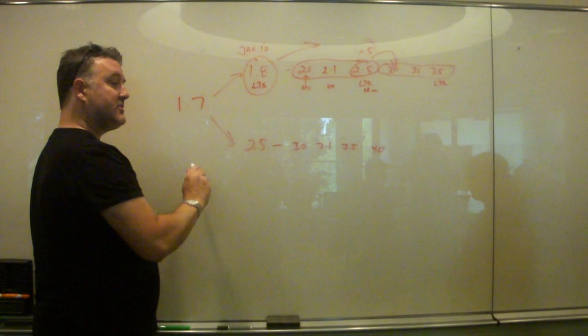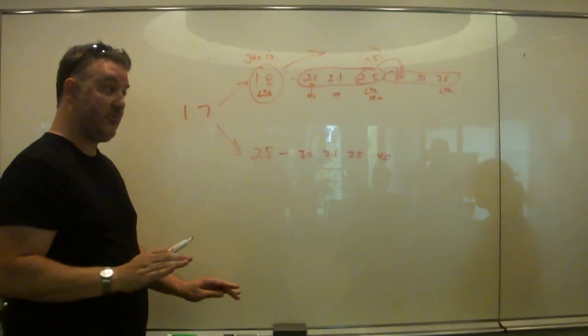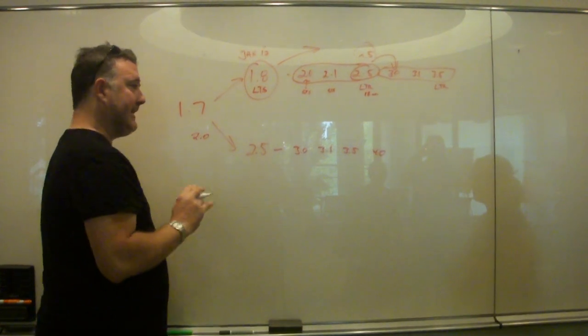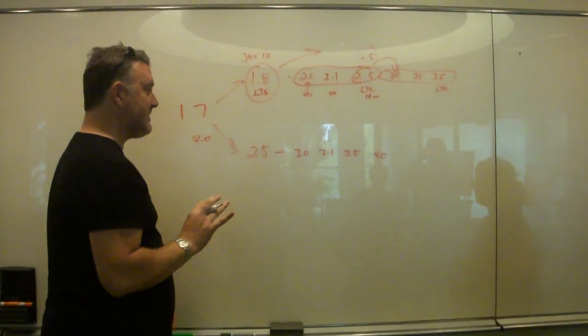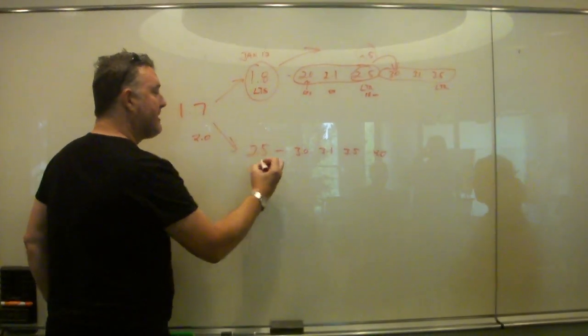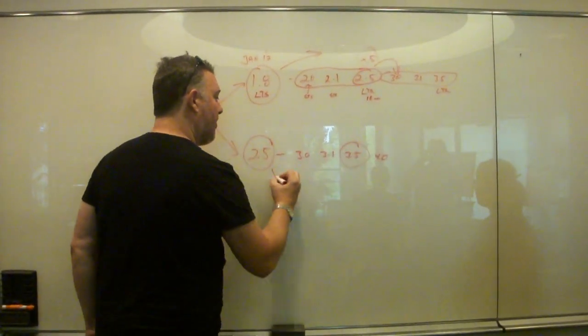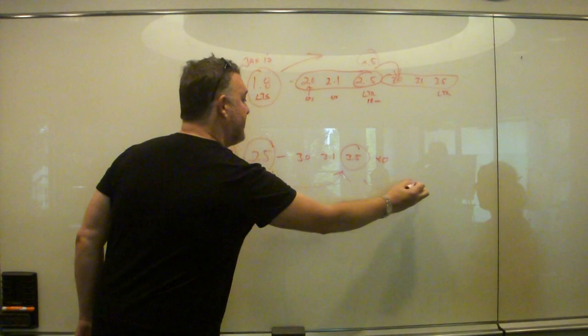Or we can go the route of just jumping straight to 2.5 from 1.7. Now people will wonder why there's no 2.0, and that's a drawback of this particular plan. But with 2.5, you're automatically, immediately in sync with all long-term releases using the 0.5 moniker.